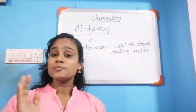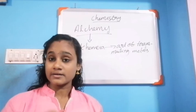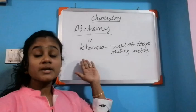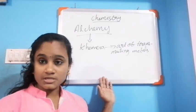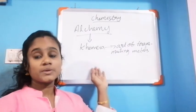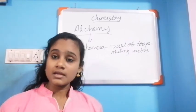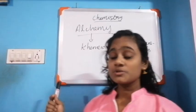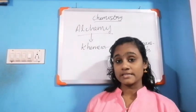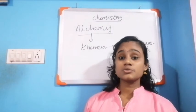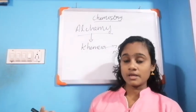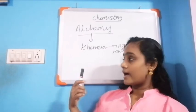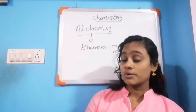This is very important — please mark in your textbook and write in your lecture note. Alchemy originated from 'chemia', which means art of transmuting metals. This alchemy has played an important role in the development and growth of chemistry.